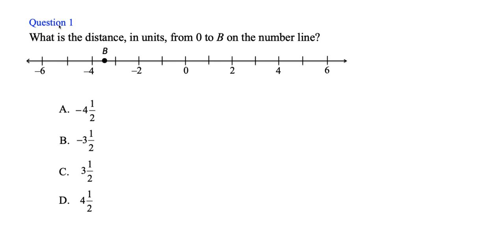Let's jump into question one. It says: what is the distance in units from zero to B on the number line? Before I jump in, I want to highlight a really important word here — distance. Whenever you see the word distance, your answer has to be positive, because we never measure distance in negative units. So any answer choice that contains a negative sign, you can eliminate.